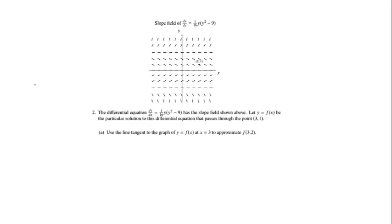This problem is worth 10 points, so please up at the top get ready with a blank out of 10 and record that when you're done. The differential equation dy/dx is equal to 1/16th y times (y squared minus 9). It has a slope field shown above. Let y equals f of x be the particular solution to this differential equation that passes through the point (3, 1).